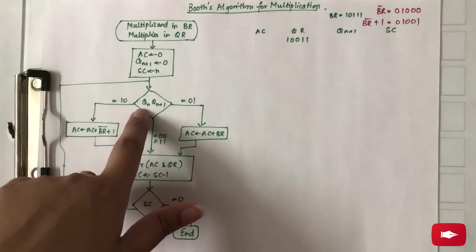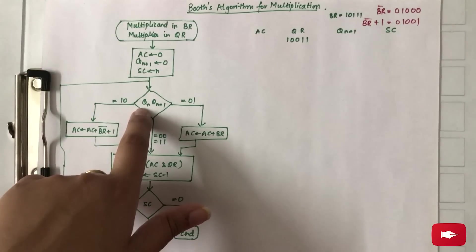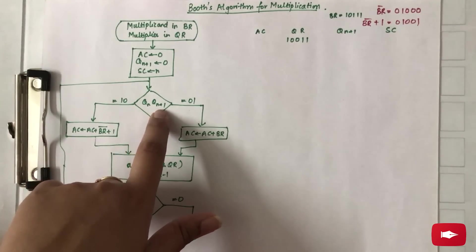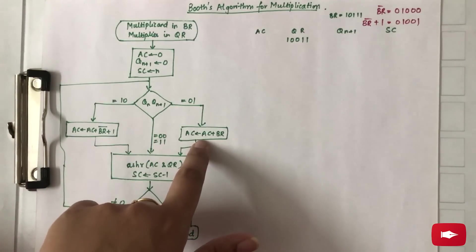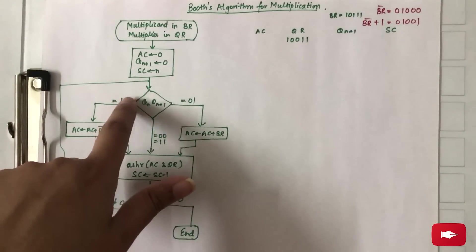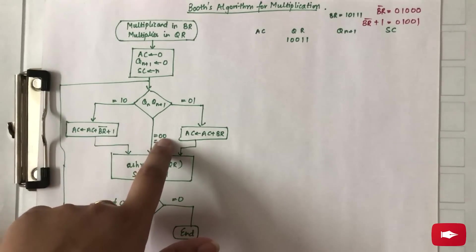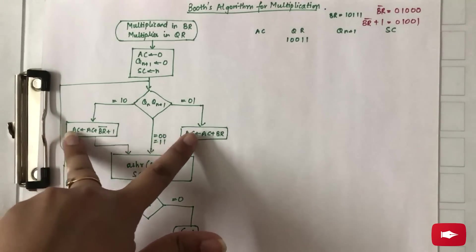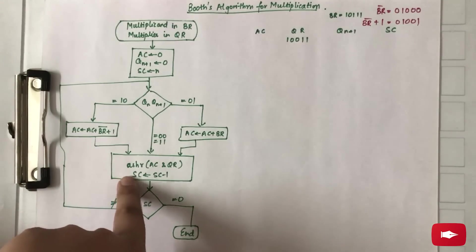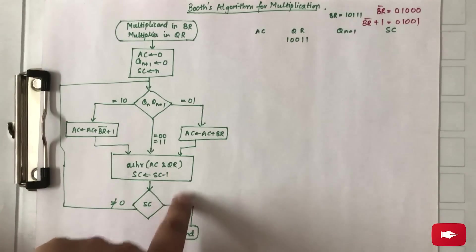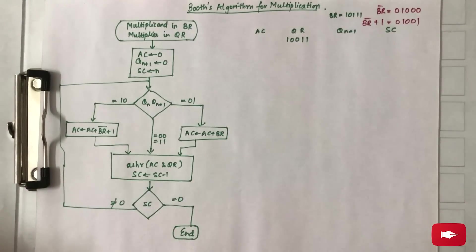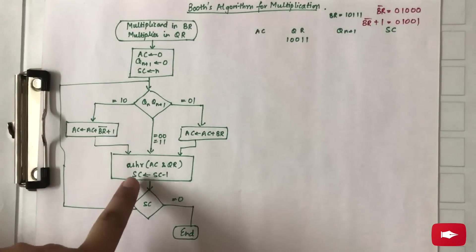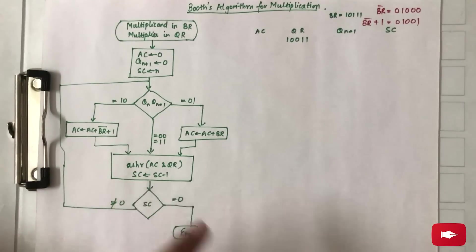Proceeding with the flowchart, we check the last bit of Q_R, that is Q_N and Q_N+1 together. If it is 0,1 — addition is performed between A_C and B_R. If it is 1,0 — subtraction is performed. If it is 0,0 or 1,1 — arithmetic shift right is performed. After the addition or subtraction, arithmetic shift right also has to be done for A_C and Q_R. In the previous video where sign bits were handled separately, a normal shift right was performed; here it is arithmetic shift right, so there is a difference between the two.